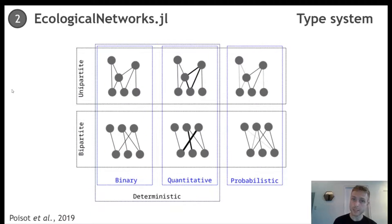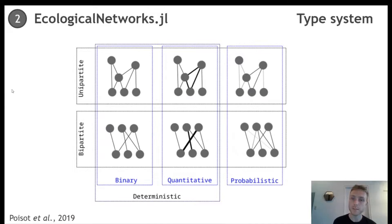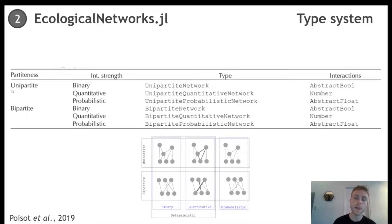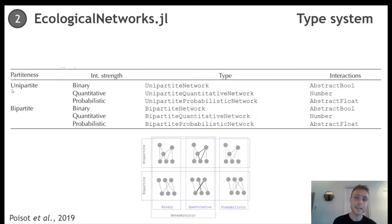More precisely, the type system is also based on the partedness of networks. Some of them are unipartite, when the adjacency matrix is square and all row species are the same as the column species. And some of them are bipartite, when row species are different than the column species. So Ecological Networks takes that into account, and we have six different types based upon the partedness and the interaction strength of a network. This is particularly useful to make sure that we use the correct measure when we analyze a network — that is, if we need to use deterministic or probabilistic measures.